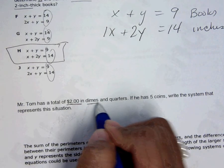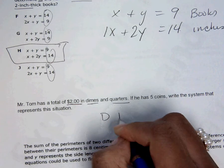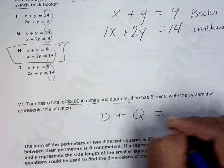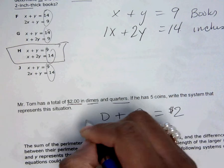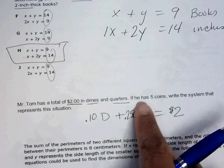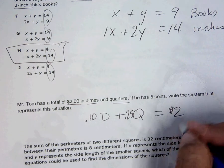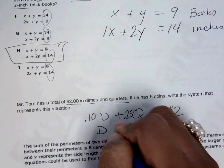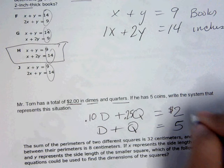I have 2 dollars and dimes and quarters, so D plus Q equals 2 dollars. But dimes are 10 cents and quarters are 25. You have to remember to put that in there. If there are 5 coins, my dimes plus my quarters equals 5. You're done.